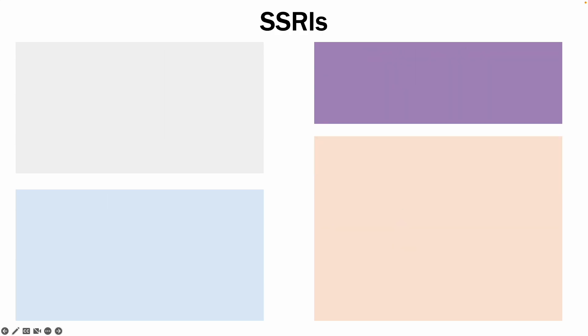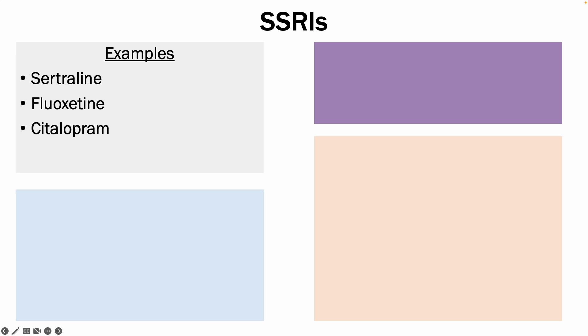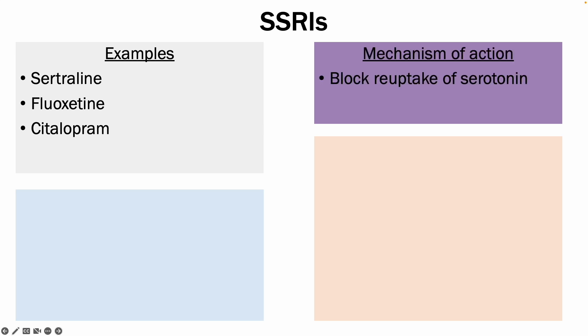Next, probably one of the most common antidepressants — SSRIs, or selective serotonin reuptake inhibitors. Some common examples include sertraline, fluoxetine, and citalopram. The mechanism of action is the block of the reuptake of serotonin, again to increase the amount of it in the synaptic cleft.